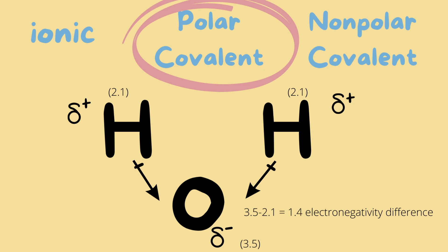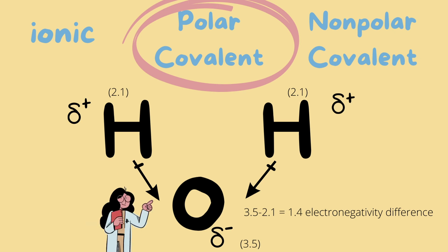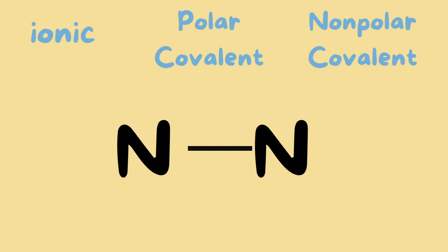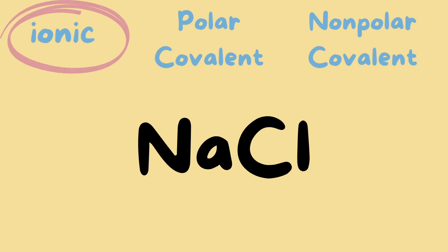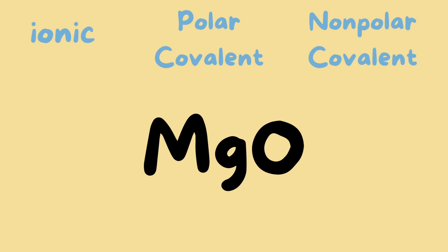I also want to introduce the dipole moment symbol here — the arrow points in the direction of the most electronegative atom. In the case of H2O, both arrows point toward the oxygen. Next, nitrogen bonded to nitrogen: we know this is a diatomic molecule, so it's automatically a nonpolar covalent bond. NaCl: sodium is our metal and chlorine is our non-metal, so we have an ionic bond. Magnesium oxide: magnesium is our metal and oxygen is our non-metal, so we have an ionic bond.